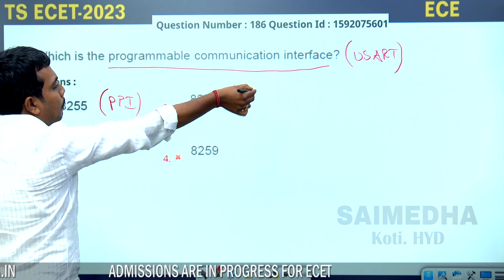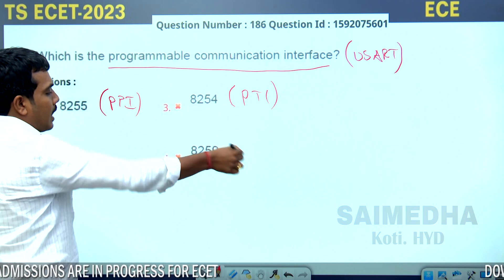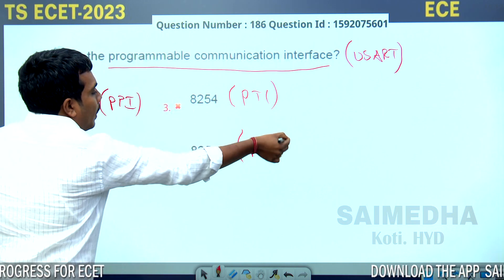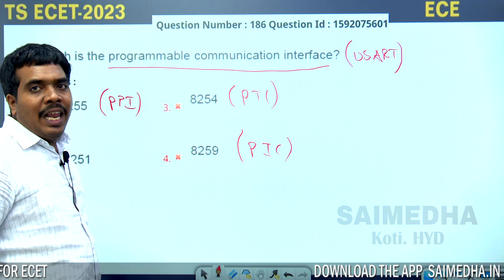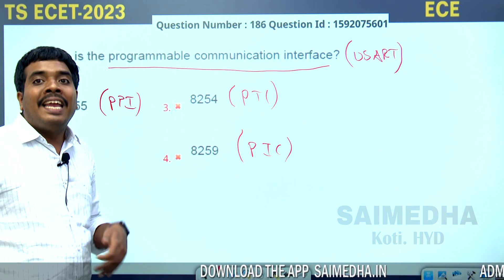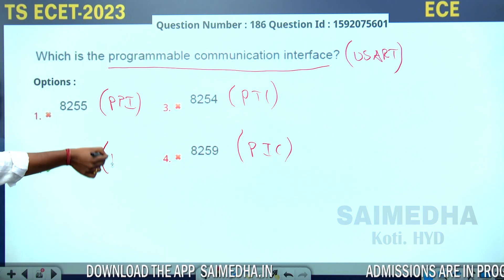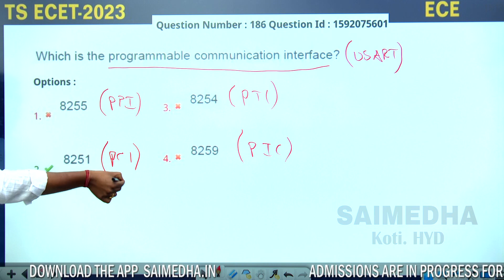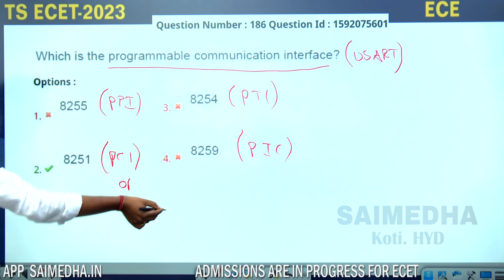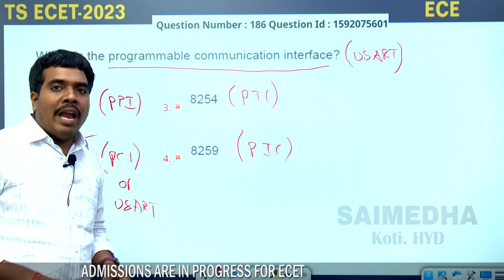The 8254 is a PTI — Programmable Timer Interface. The 8251 is a PCI — Programmable Communication Interface, also known as USART. So since they are asking for the programmable communication interface, the correct answer is 8251.